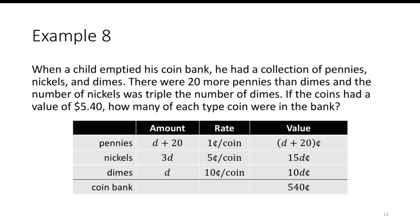So again, I have the amount, rate, value columns. And in this case, I'm mixing together pennies, nickels, and dimes. And it looks like there's 20 more pennies than dimes, and 3 times as many nickels as dimes. So let's say dimes is my variable, I'll call it d. Pennies would be 20 plus d, so there's a d plus 20. And nickels, 3 times, so 3 times d is 3d.